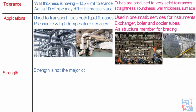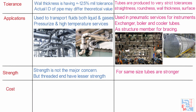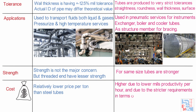Regarding strength, pipe strength is not the major concern, but threaded-end pipe has lesser strength. For the same size, tubes are stronger. In terms of cost, pipes have a relatively lower price per ton than steel tubes since they are manufactured on stock and quality checking is less rigorous. Tubes have higher prices due to lower mill productivity per hour and due to stricter requirements in terms of tolerances and inspections.